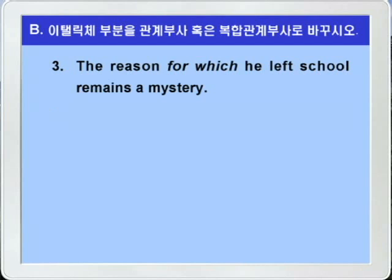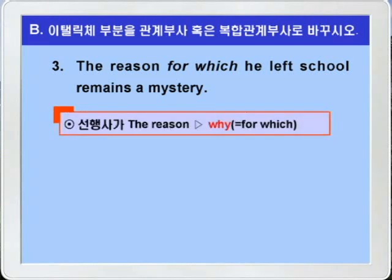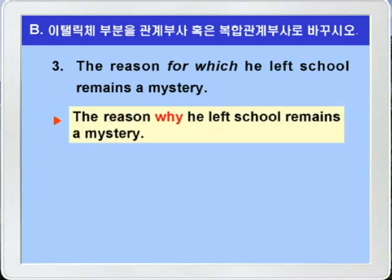3번. 'The reason for which he left school remains a mystery.' remain은 자동사로 여전히 뭐뭐이다, 뭐뭐인 채로 있다 이런 뜻이니까 — 그가 학교를 떠난(그만둔) 이유는 remains a mystery — 여전히 하나의 미스터리로 남아있다, 다시 말해 여전히 알려지지 않고 있다. 선행사가 the reason 즉 이유니까 for which는 이유의 관계부사 why로 바꾸면 되겠습니다. 'The reason why he left school remains a mystery.'